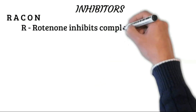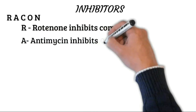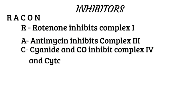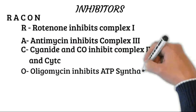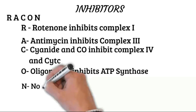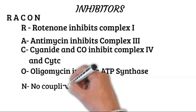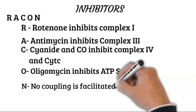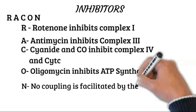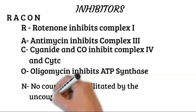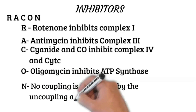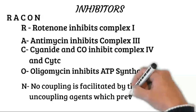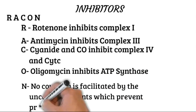The inhibitors of the electron transport chain can be remembered by the mnemonic RACON. R stands for rotenone, which inhibits Complex I. A stands for antimycin, which inhibits Complex III. C stands for cyanide and carbon monoxide, which inhibit Complex IV and cytochrome c. O stands for oligomycin, which inhibits ATP synthase. N stands for the fact that no coupling is facilitated by uncoupling agents, which prevent proton transfer across a gradient.